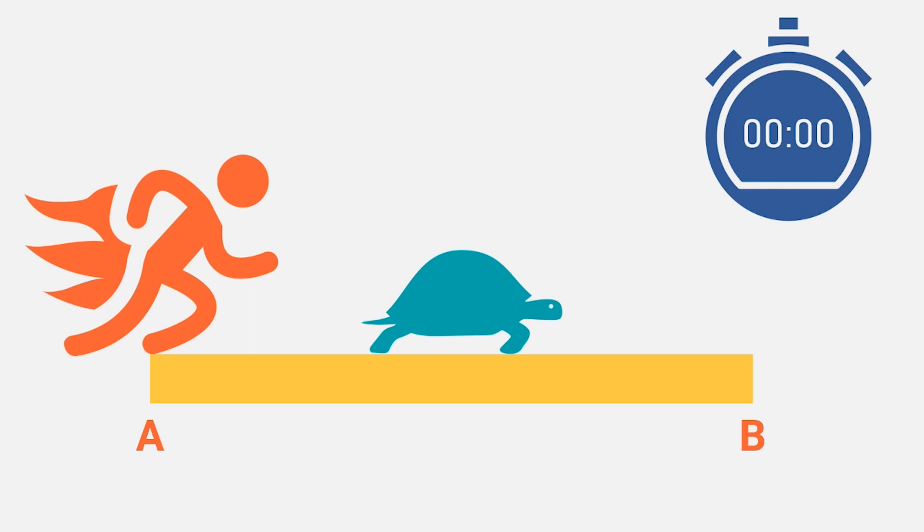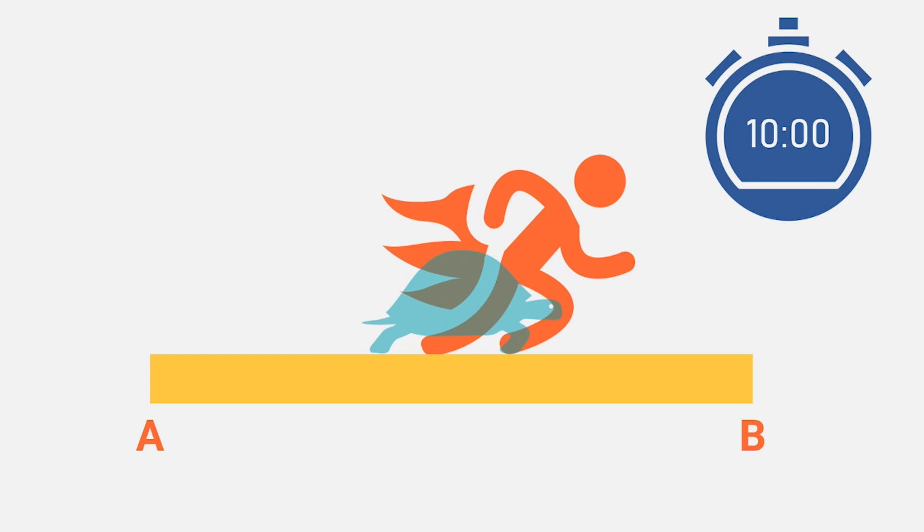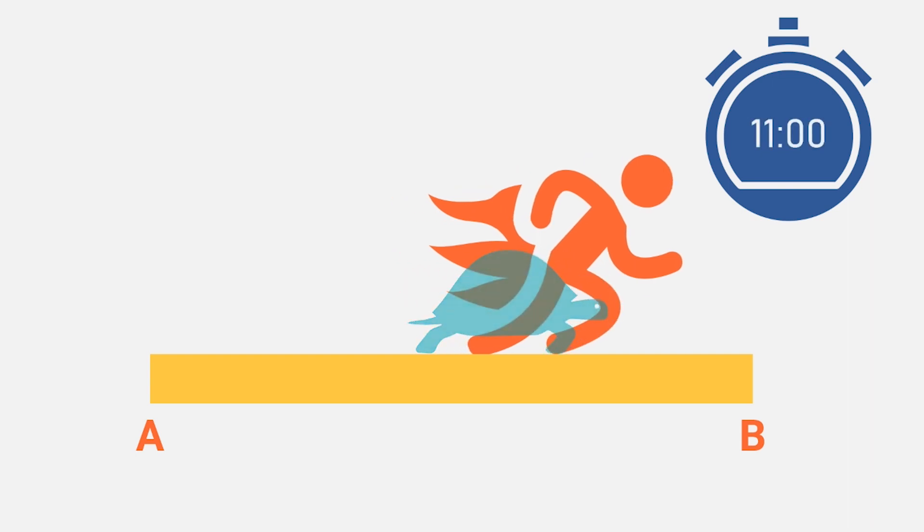And Achilles runs and runs, and after a short amount of time, he caught up to where the tortoise was. But the tortoise wasn't standing still during that time. So the tortoise is a little further ahead. So let's move the clock forward to the point where Achilles reaches the point where the tortoise is now. There we are. There he is. But there the tortoise is no longer.